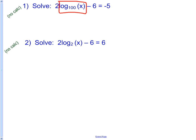Okay, so tell me something to do first. Yes, add six. If I add six to both sides then I'm going to have 2log₁₀₀(x) = 1. And now what? Divide by two and that'll get that little part alone: log₁₀₀(x) = 1/2.